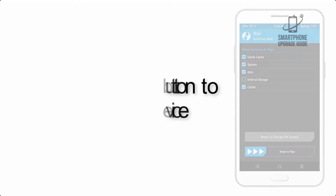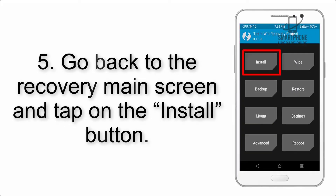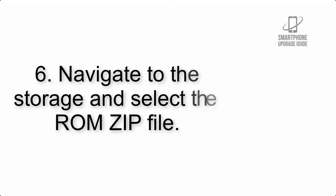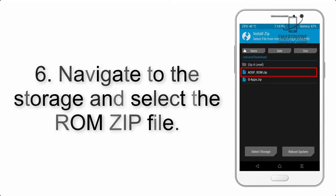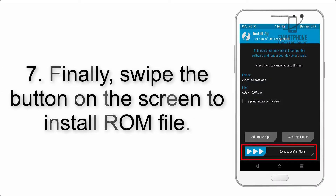Step 4: Swipe the button to wipe the device. Step 5: Go back to the recovery main screen and tap on the Install button. Step 6: Navigate to the storage and select the ROM zip file.